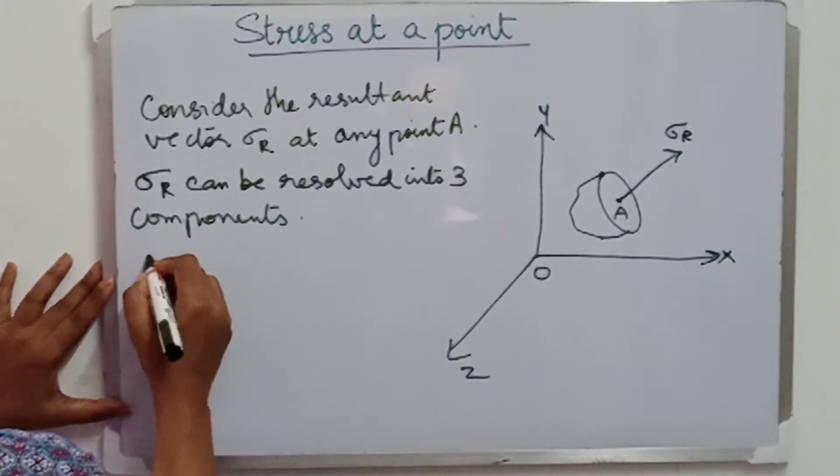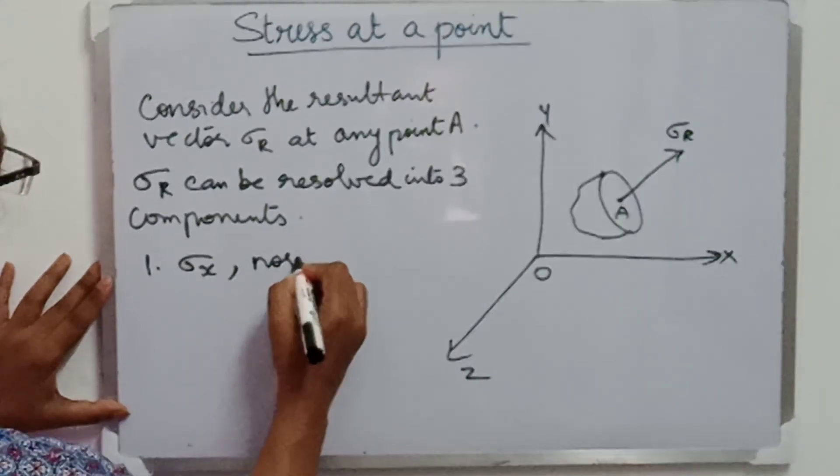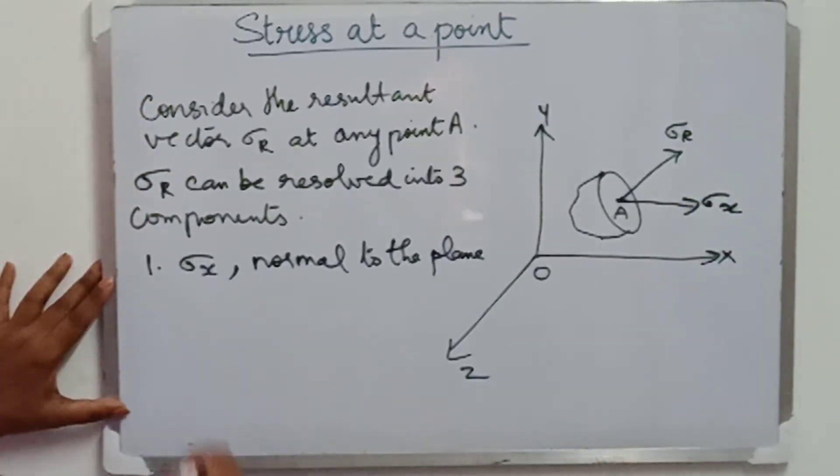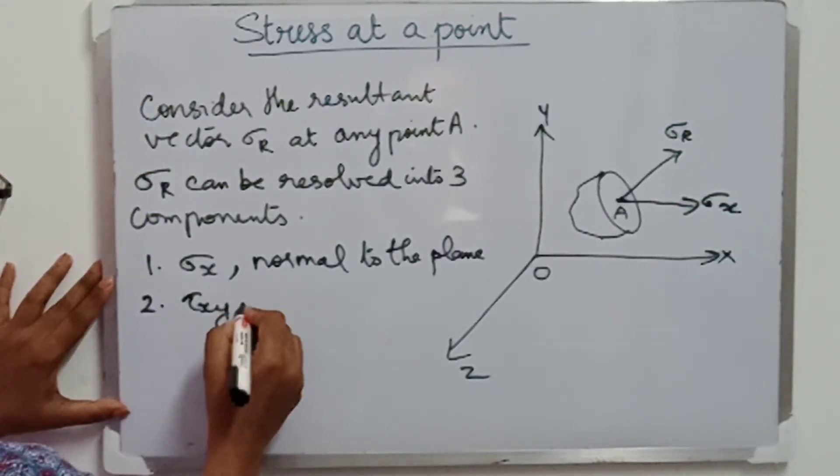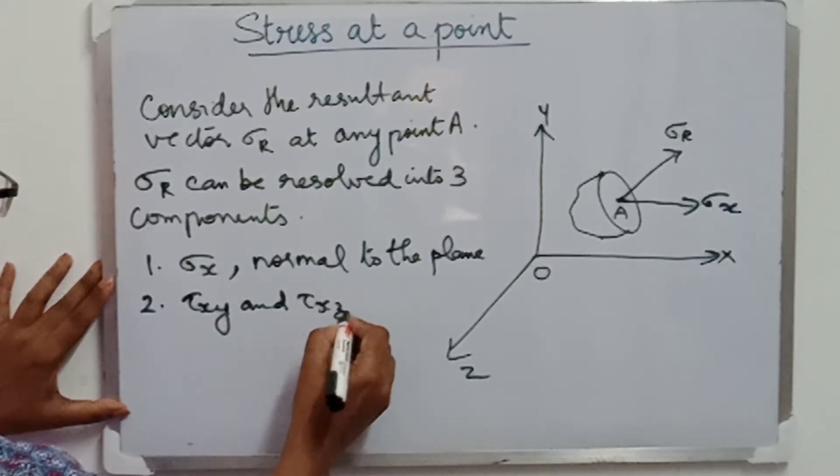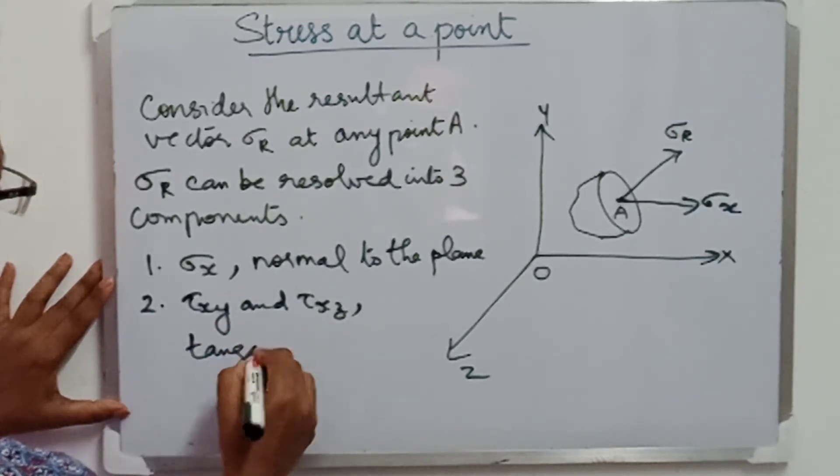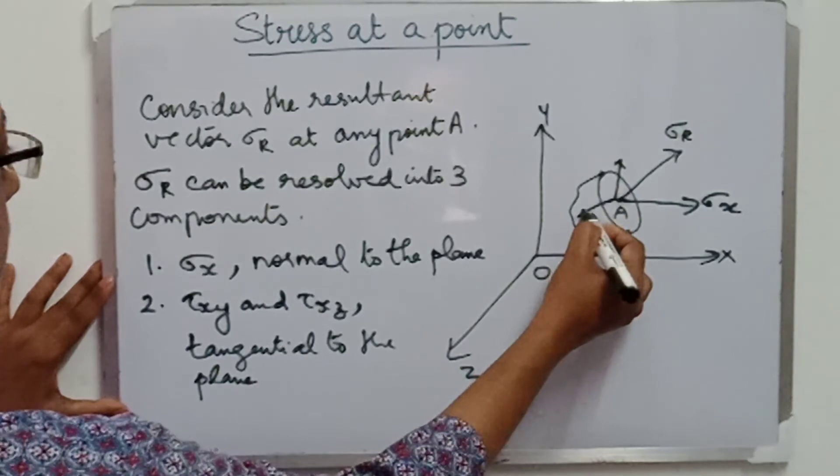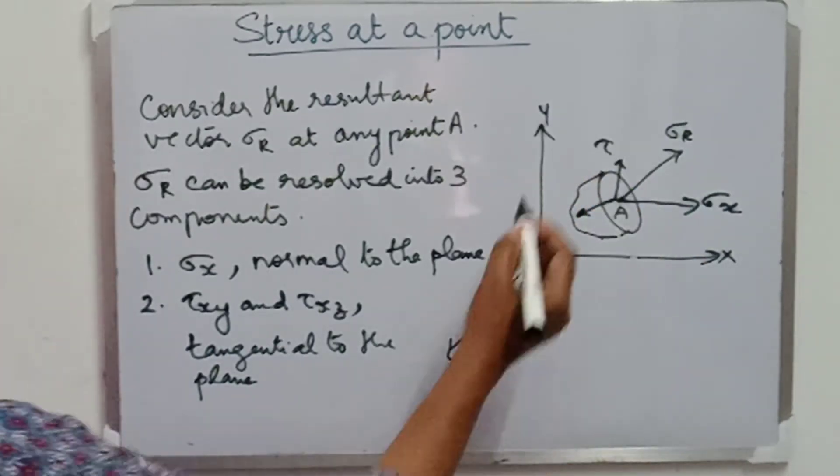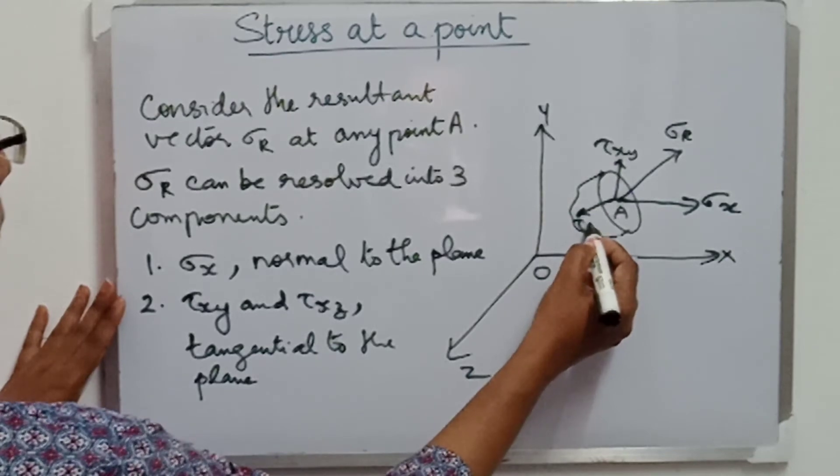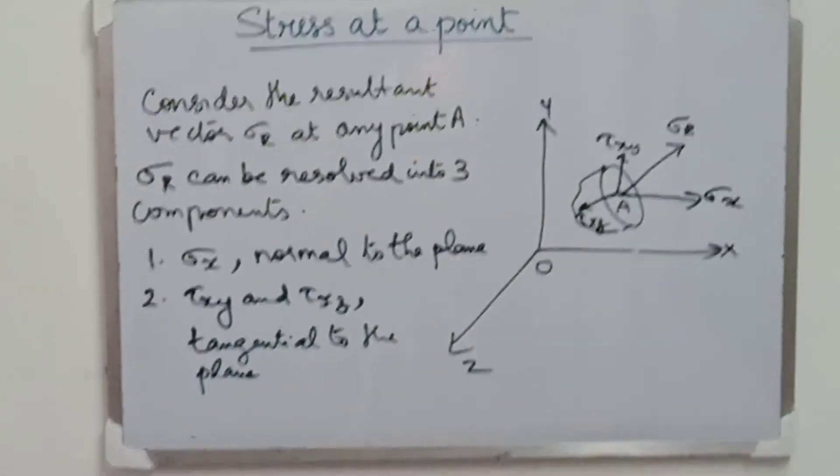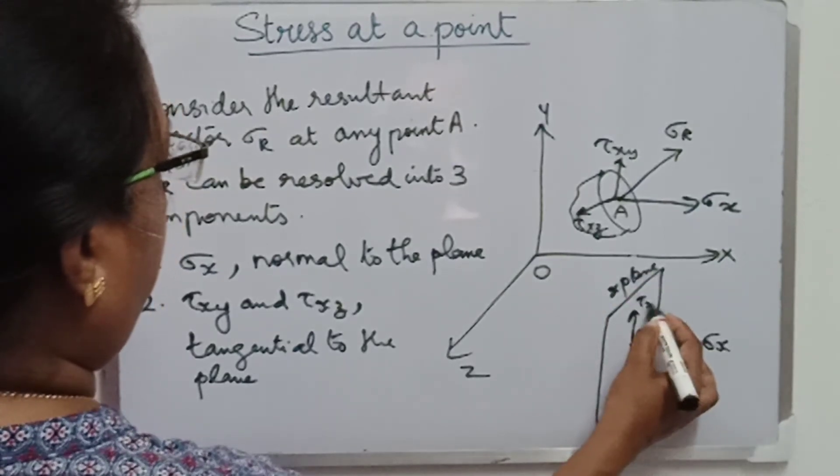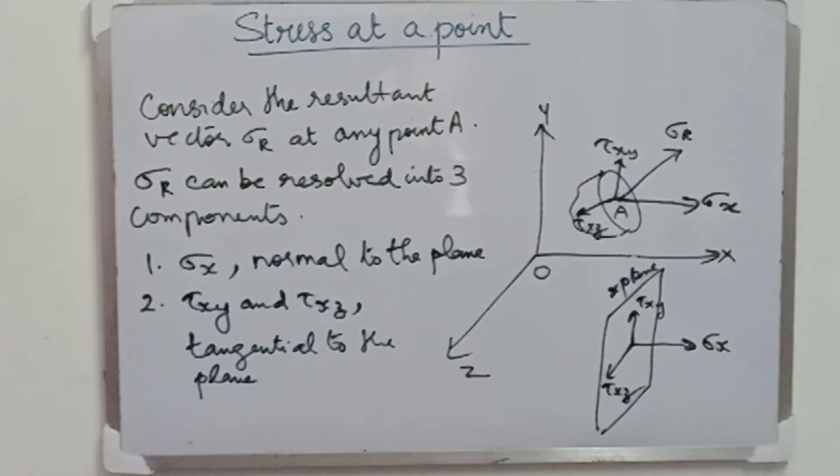So, sigma r can be resolved into three components. One is the normal component that is sigma x that is in the direction of x and other two components will be tau xy and tau xz which are tangential to the plane. Here, we have considered a plane whose normal is in the x direction. I am marking tau xy and tau xz. Now, let me draw this plane separately. I am naming it as x plane as the normal of this plane is in x direction and marking the stress component sigma x, tau xy and tau xz.